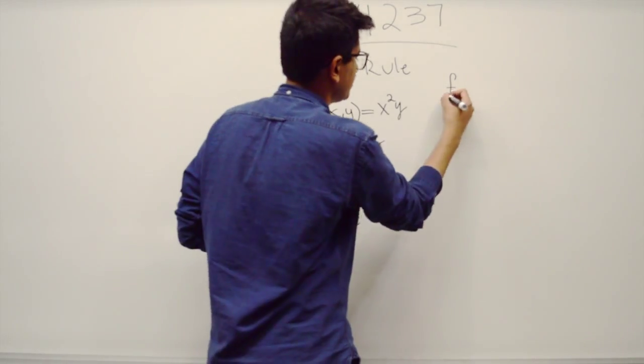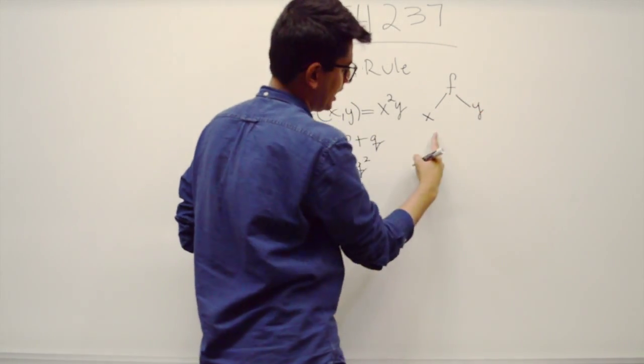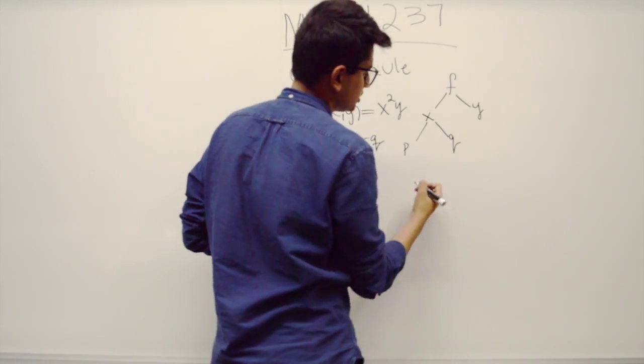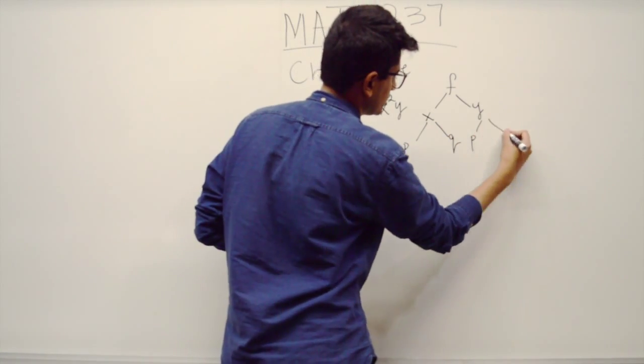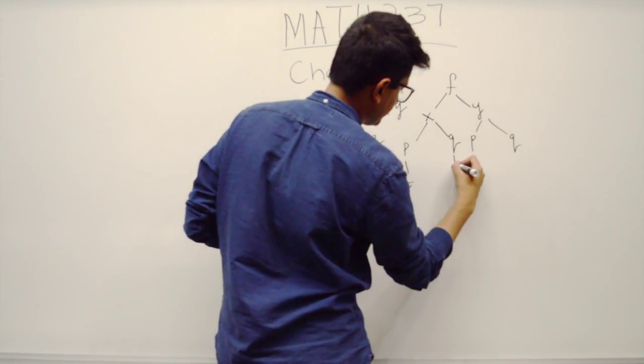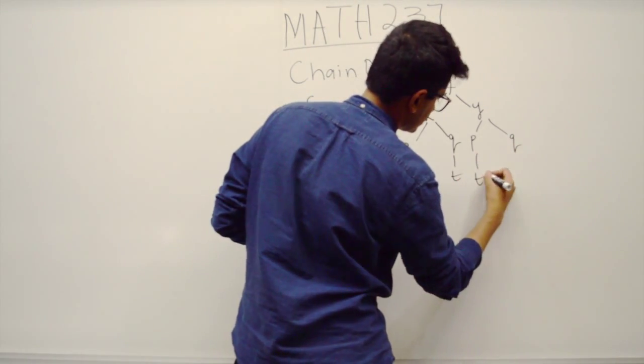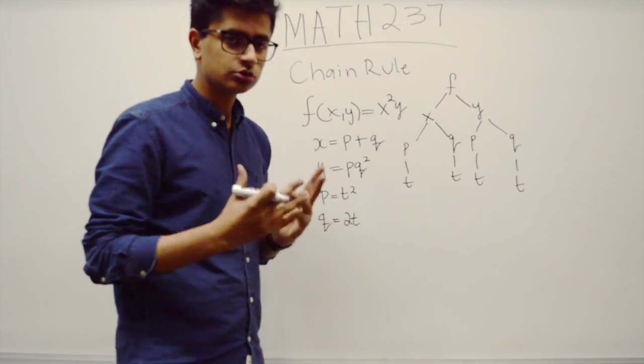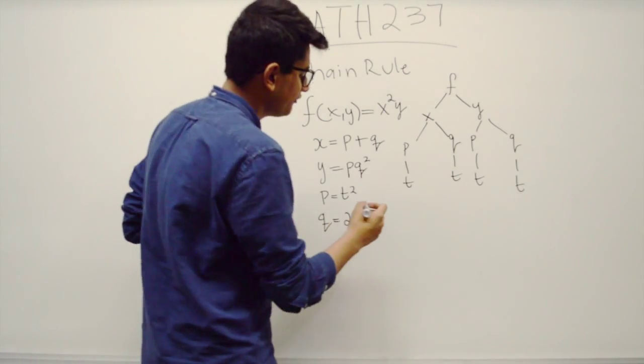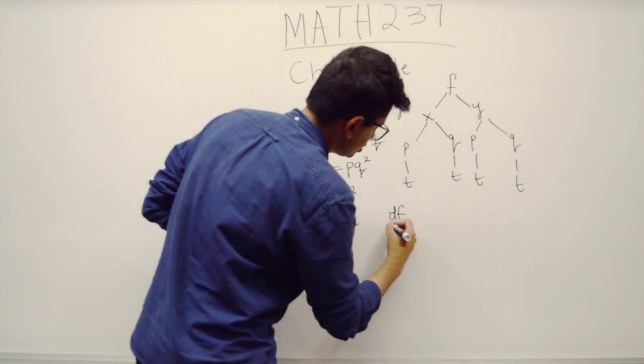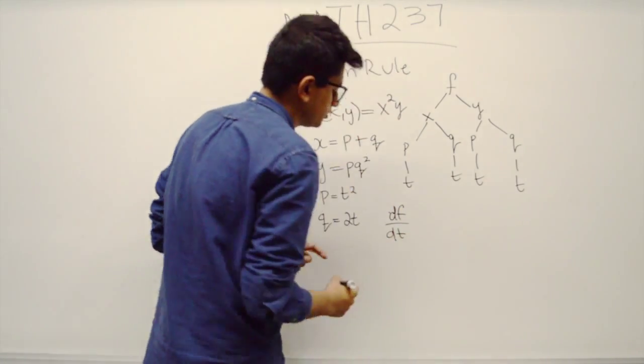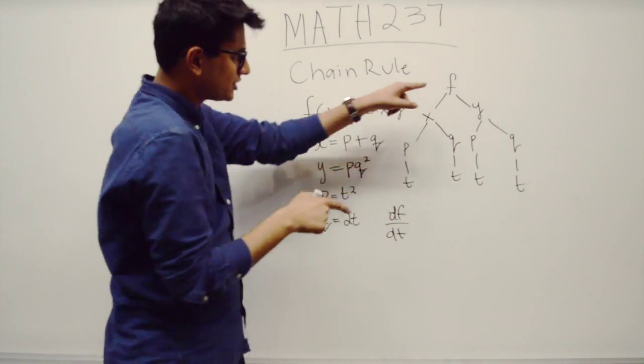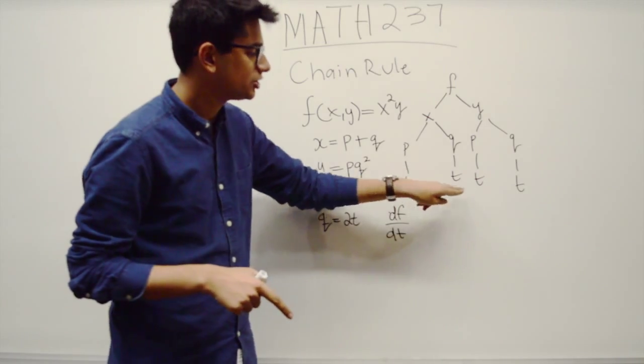To visualize this, it's very important to draw a tree diagram. So at the top you have f, it's a function of x and y. Each of x and y are functions of p and q. And p and q, all of them, are functions of t. The chain rule question probably looks something like: find the change in f, or the derivative of f with respect to t. The problem is there are different levels that you have to go through to get to each of the t's.